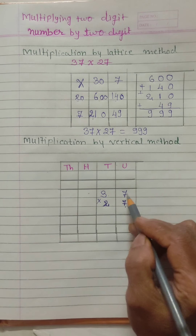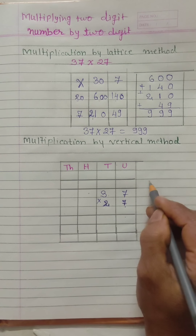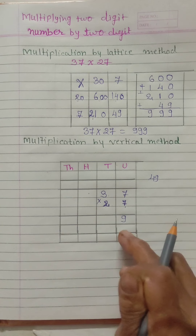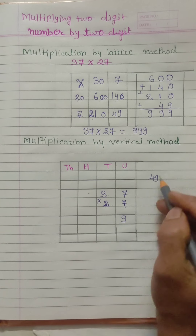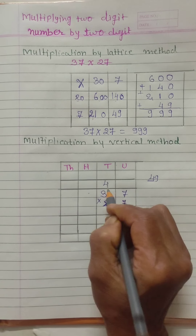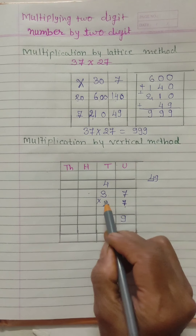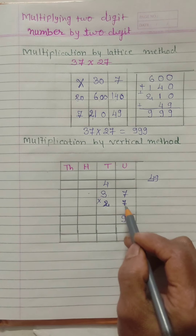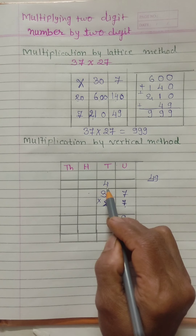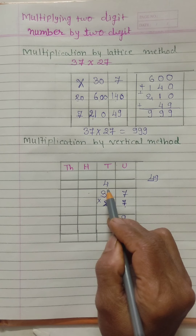In the unit place there is 7, and we will multiply the unit places. 7 sevens are 49. We will not write 49 here directly — in 49, the 9 is units so we write only 9 in the units place. This 4 is tens, so we will carry the 4 to the tens place. Now we will multiply this 3 by 7. 7 threes are 21, and 21 plus 4 is 25.